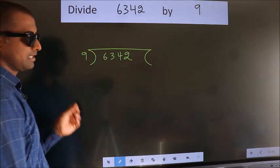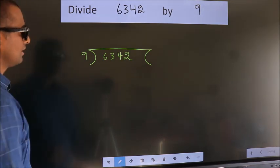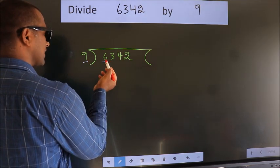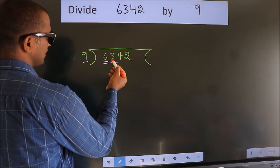This is your step 1. Next, here we have 6, here 9. 6 smaller than 9. So, we should take 2 numbers, 63.